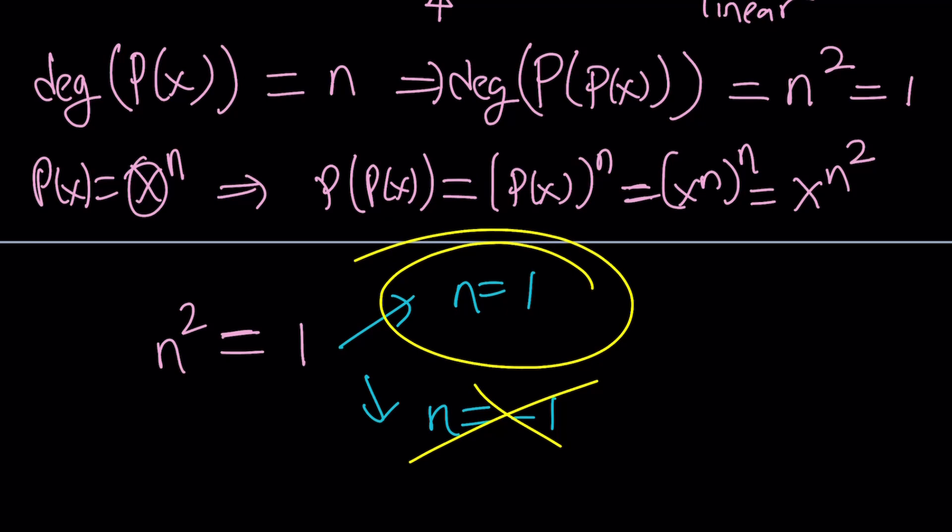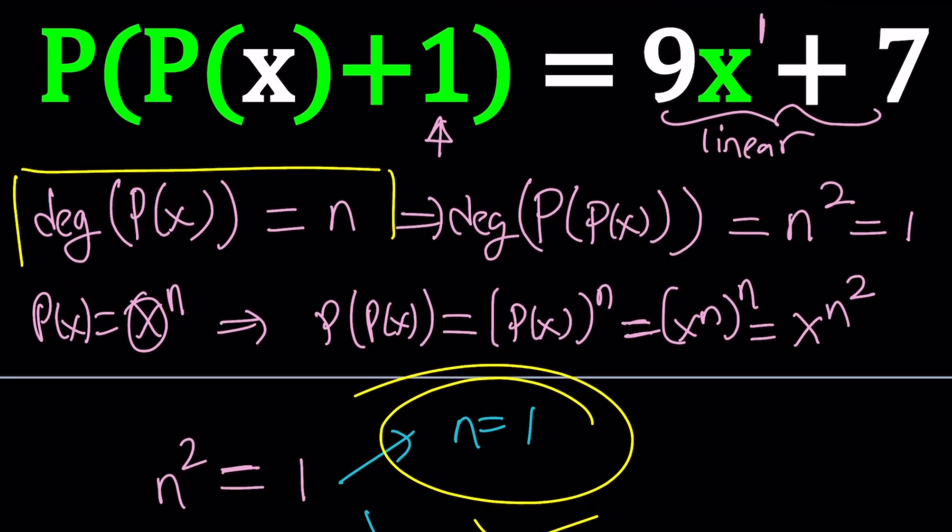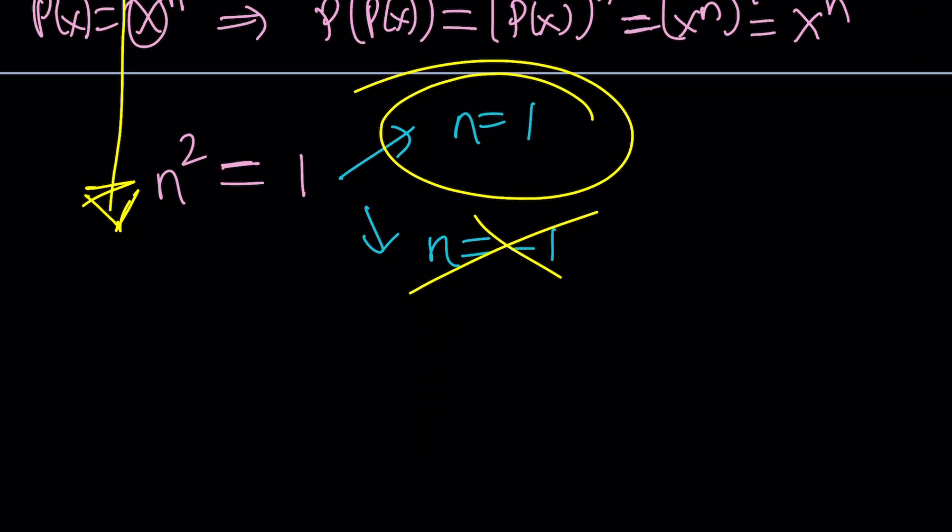So we can't use this, n should be 1. In other words, we have a linear polynomial. So all this work for nothing? No, not really. This is actually the most critical part. We were able to identify P(x) as a group or as a class of polynomials. So P(x) is a linear polynomial. That's our conclusion, and this is super important.